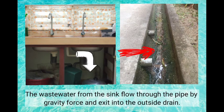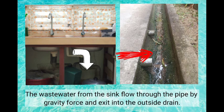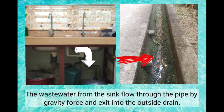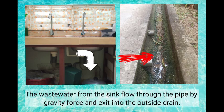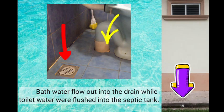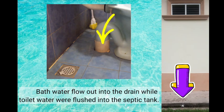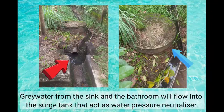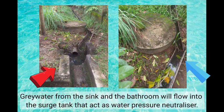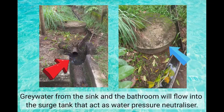The wastewater from the sink flows through the pipe by gravity force and exits into the outside drain. Bath water flows out into the drain while toilet water is flushed into the septic tank. Greywater from the sink and the bathroom will flow into the surge tank that acts as a water pressure neutralizer.